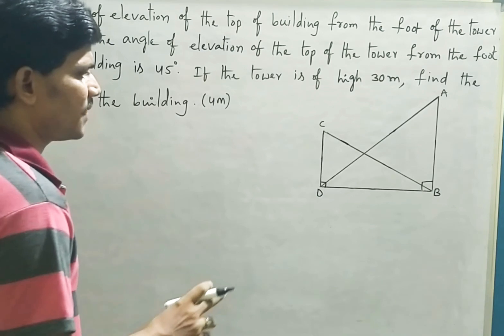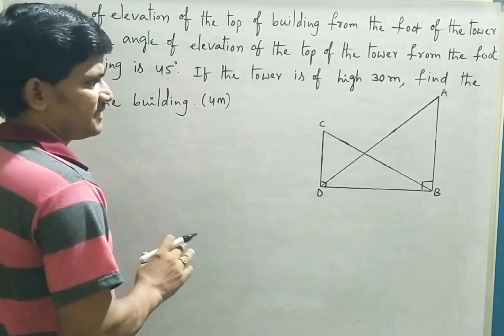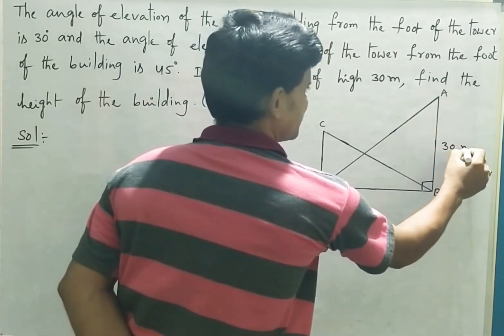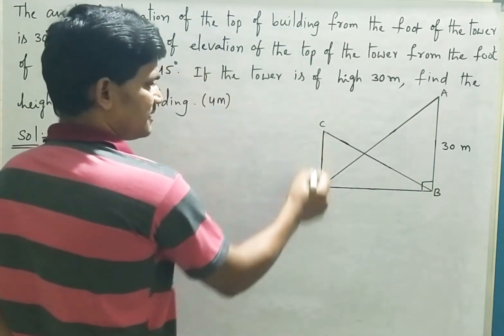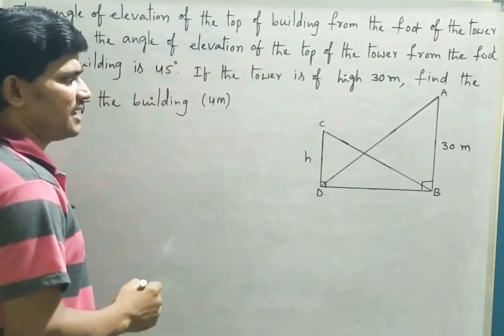The vertical lines represent the tower and building. Here AB is the tower of 30 meters high, and CD is the height of the building. As we don't know, let it be some h meters.